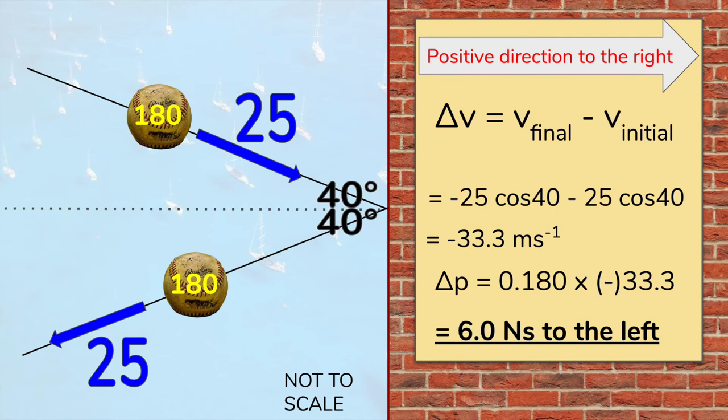We are only entitled to state two significant figures, because that's how precisely the velocities were stated. But the zero after the decimal point is important. And the direction is to the left, because the answer is negative. The momentum changes away from the wall. This makes sense because it's the wall which is exerting the force. We do not have enough information here to work out what the force is, because we do not know how much time the ball was in contact with the wall.